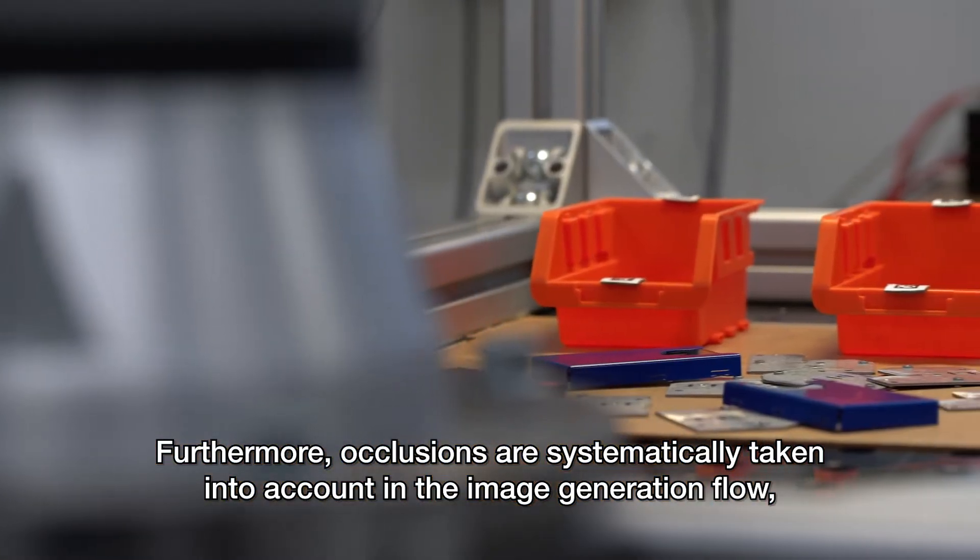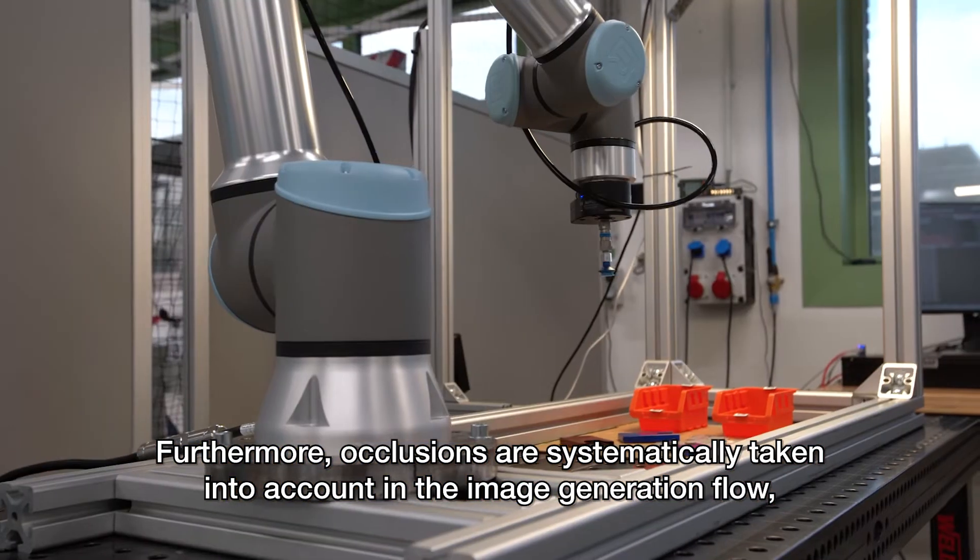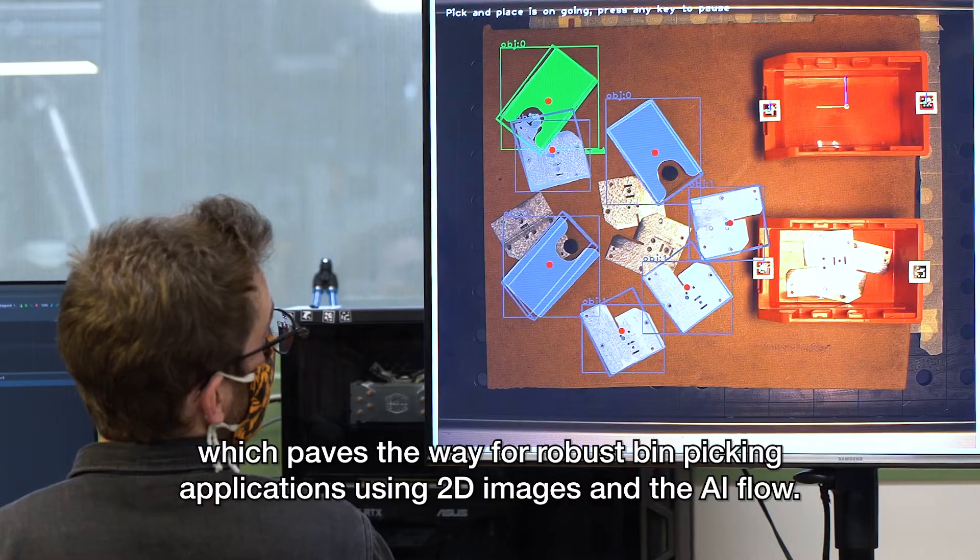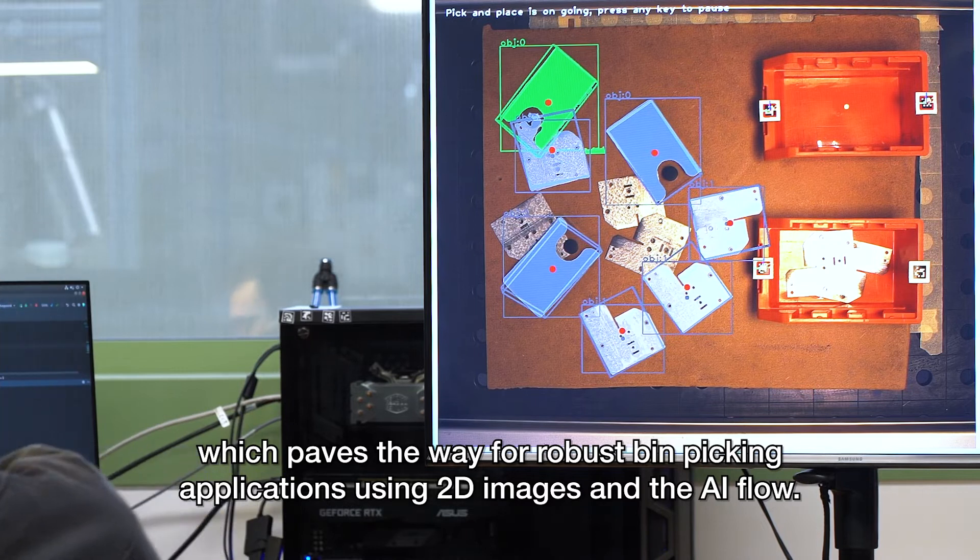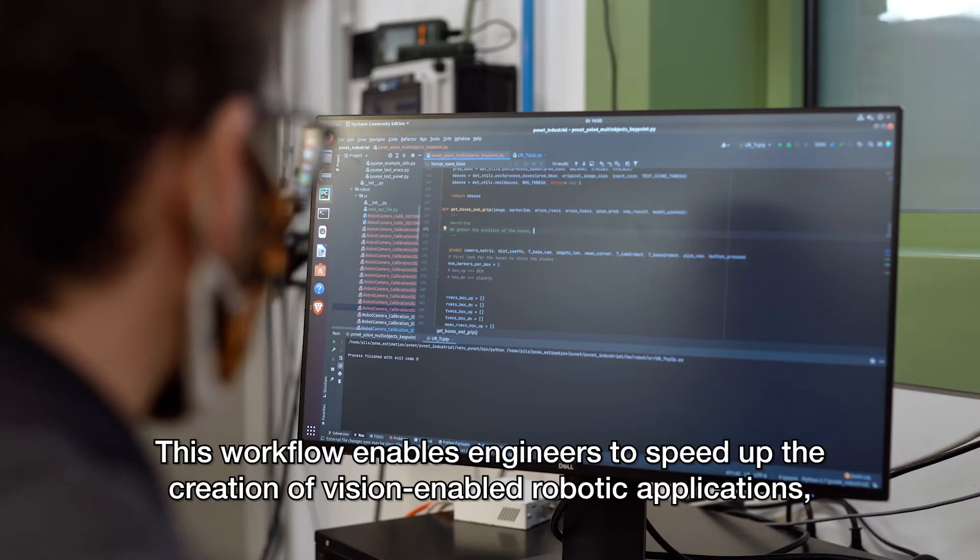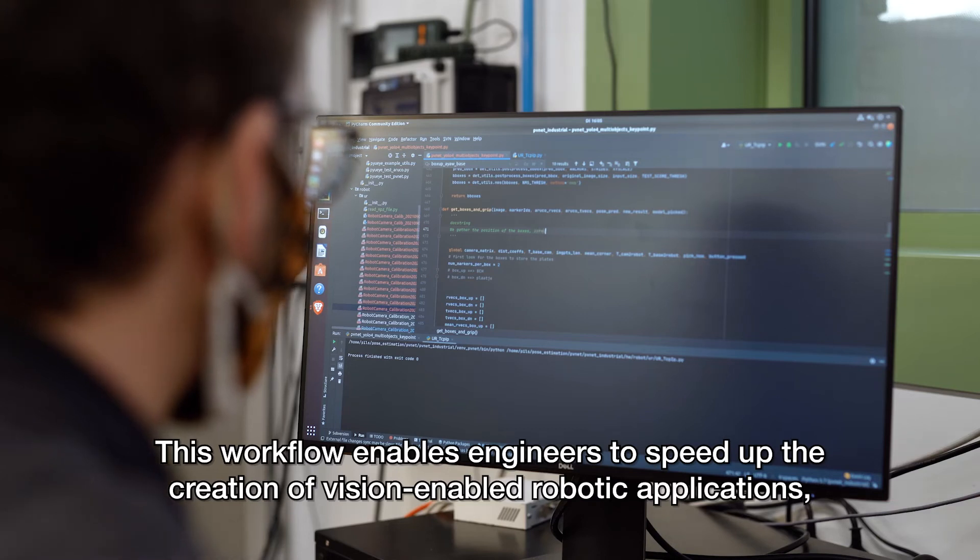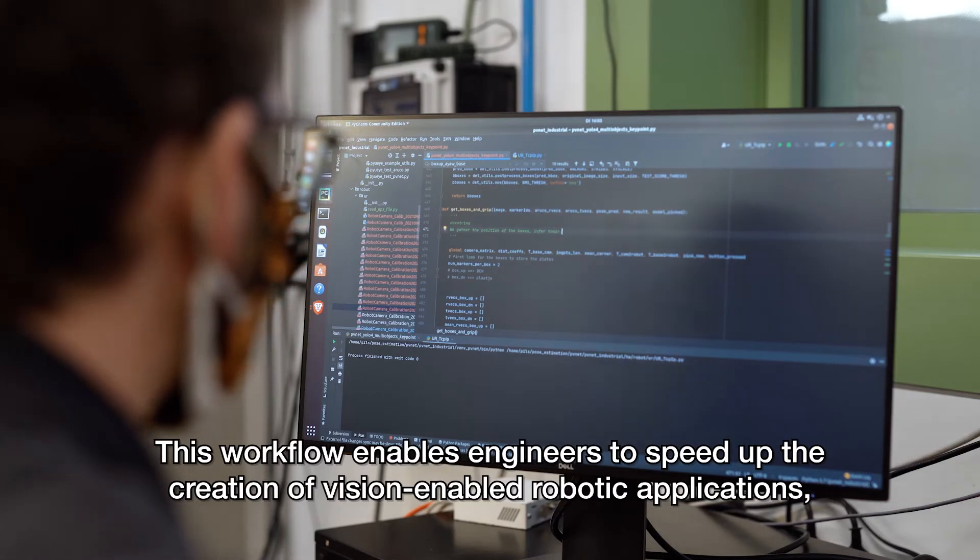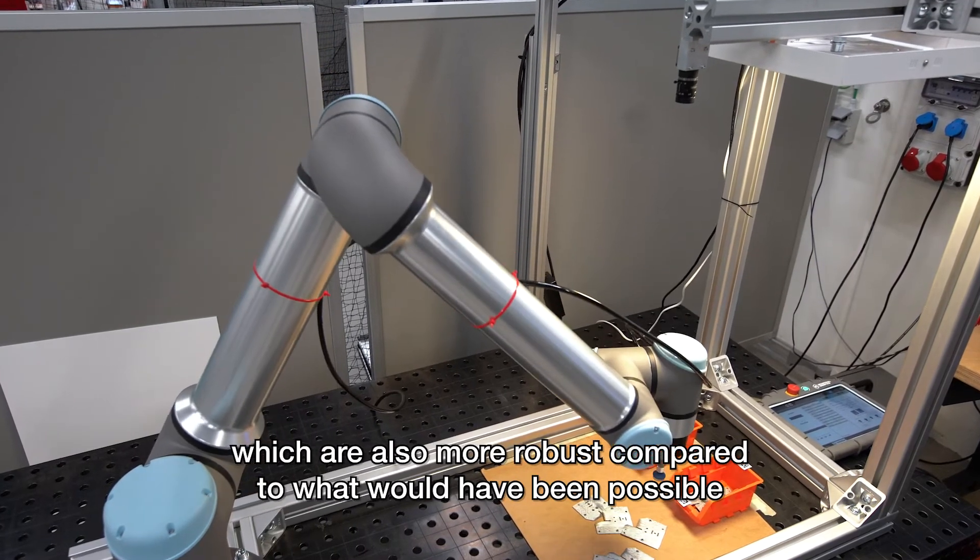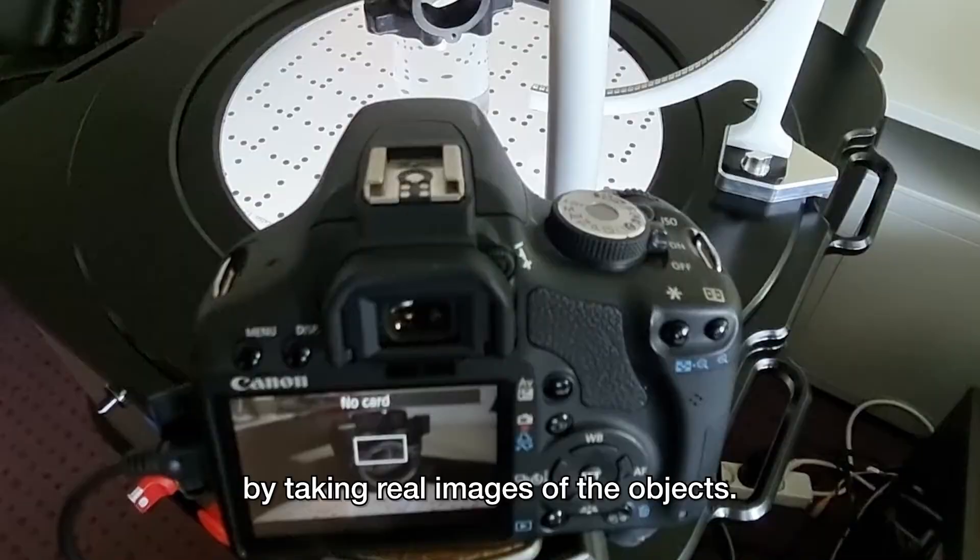Furthermore, occlusions are systematically taken into account in the image generation flow, which paves the way for robust bin picking applications using 2D images and the AI flow. The workflow enables engineers to speed up the creation of vision-enabled robotic applications, which are also more robust compared to what would have been possible by taking real images of the objects.